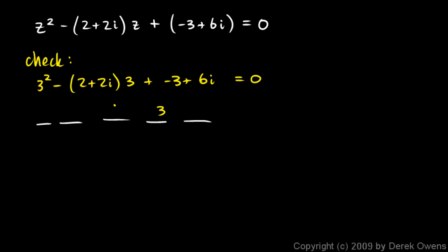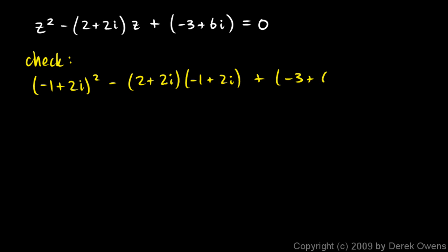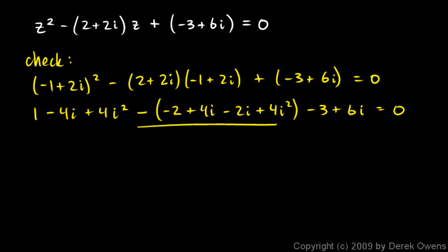And let's check our other answer as well. The other answer, the other solution was negative 1 plus 2i. So let's rewrite our equation, but we'll put in negative 1 plus 2i for z. So this is (negative 1 plus 2i) squared minus (2 plus 2i) times (negative 1 plus 2i) plus (negative 3 plus 6i). And hopefully that will all work out to 0. So here let's work this out. This is going to be a 1 minus 4i plus 4i squared. And then doing a FOIL here, we get a... I'll keep this negative sign out here for a second. We get a minus 2 and then a plus 4i minus 2i plus 4i squared. And then we have minus 3 plus 6i. And that should all equal 0.